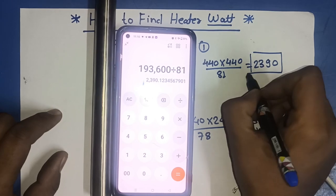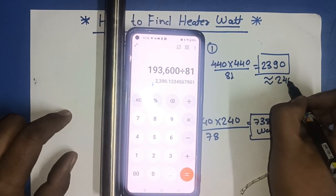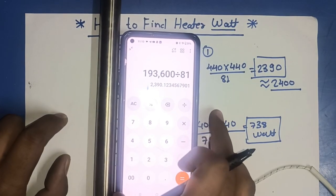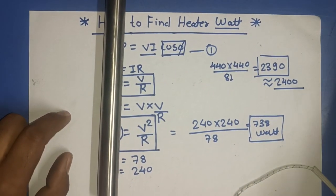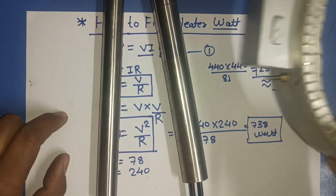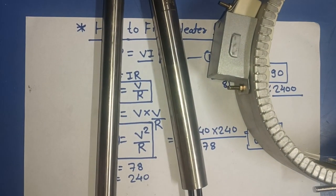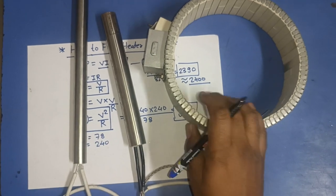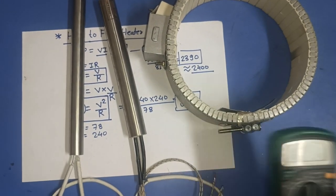2390 which is approximately 2400 watt. So, by this formula, you can calculate any of the heater watt by just measuring resistance of heater and input voltage. If you have input voltage and resistance, so you can calculate any heater watt.